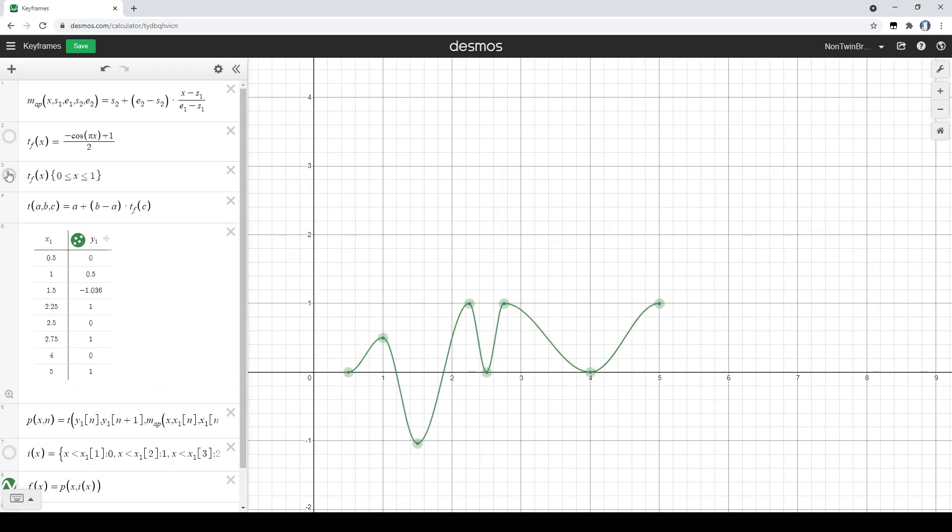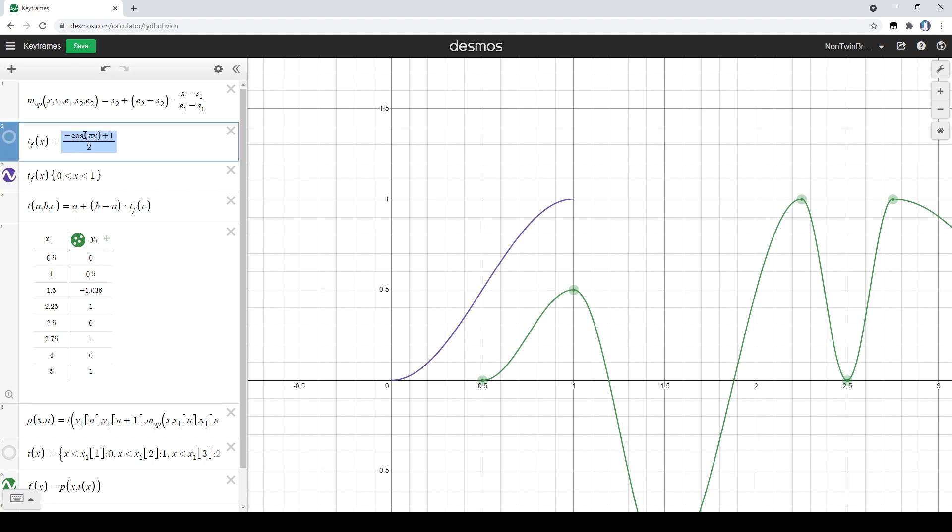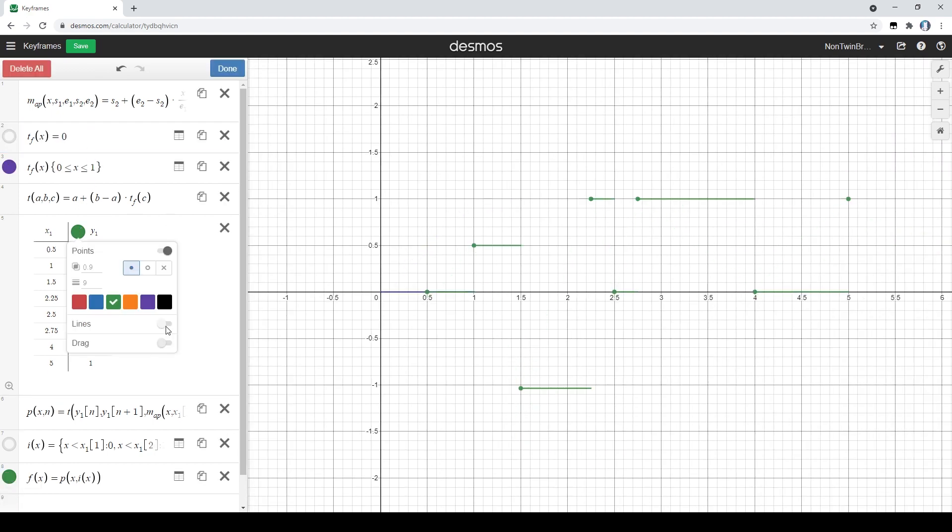Notice with these types of keyframes, you can define a transition function, which is from 0 to 1, which you can use to make different types of eases.